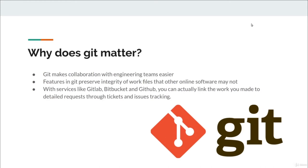So why does Git matter? Git enables you to collaborate with other teams, such as engineering teams, and easily share and track your work, especially with services like GitLab, GitHub, and Bitbucket.